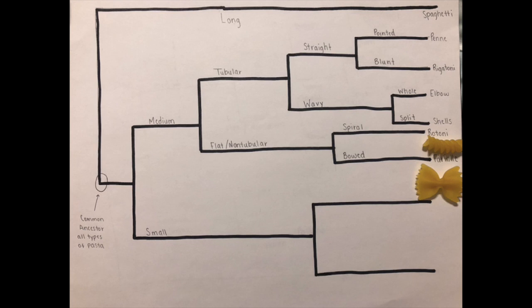If we go back to our flat branch, we then see a divergence on the traits of spiral or bow-tie. Our spiral branch leads to rotini, where our bow-tie branch gives us farfalle.